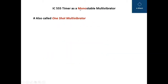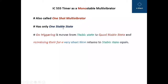Monostable multivibrator, as the name suggests, mono means single. So it has got a single stable state and it is also called one-shot multivibrator. It has only one stable state. On triggering it, it moves from stable state to quasi-stable state and remaining there for a very short time, it returns to the stable state again.